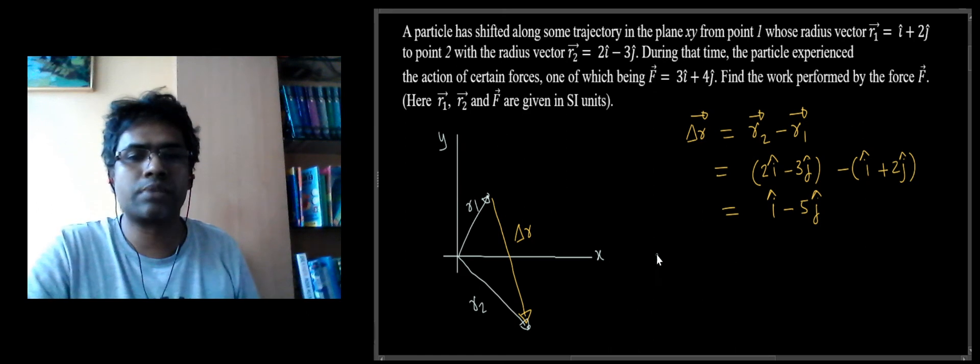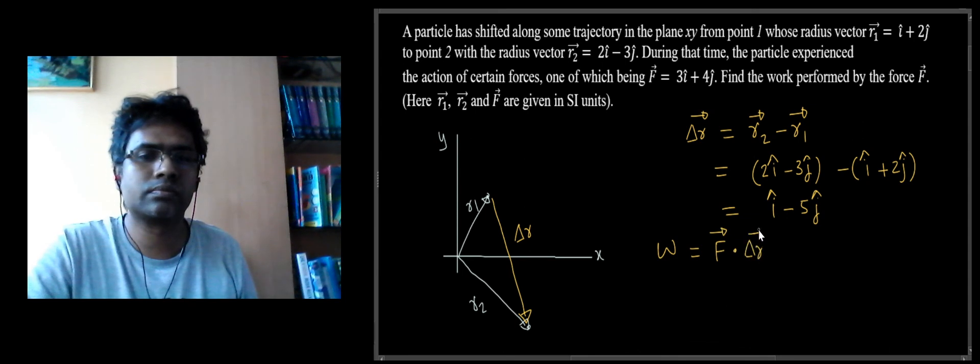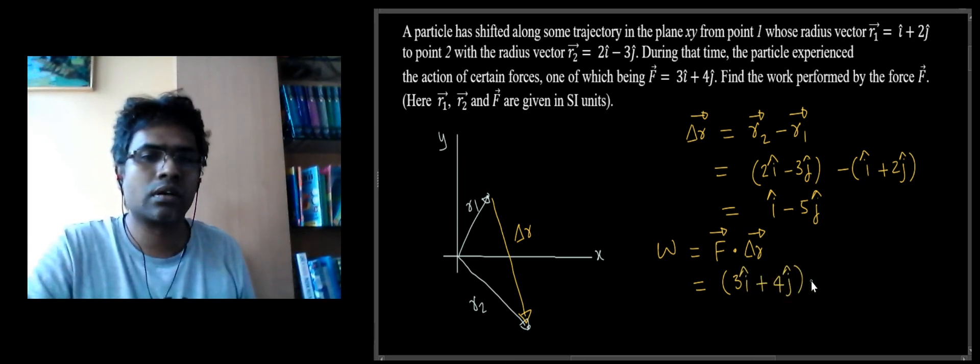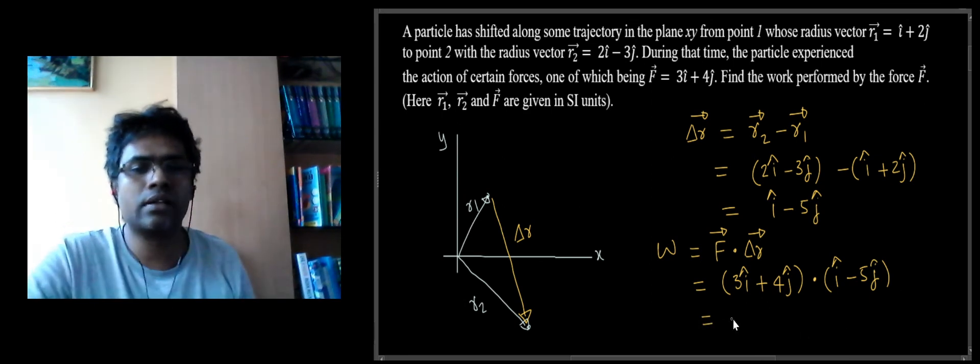Once we get the displacement vector, work done is the dot product of force and displacement vector. Force is given as 3i plus 4j, displacement is i minus 5j. Now all we have to do is multiply the like components and then add them algebraically.